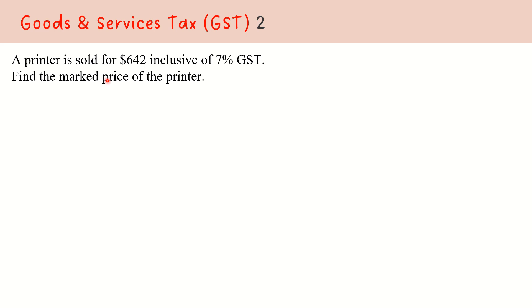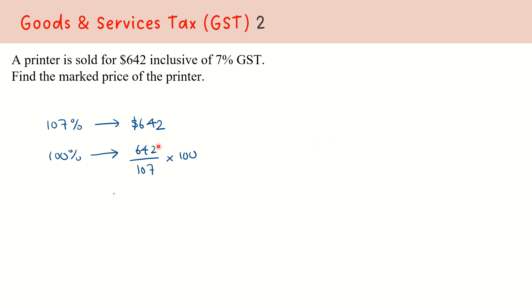This $642 is the price after GST, which is actually 107%. So 107% represents $642. In order for us to find out the marked price, we are looking for 100%, and that will be $642 over 107 times 100, therefore we get $600. In conclusion, the marked price is $600 in this question.